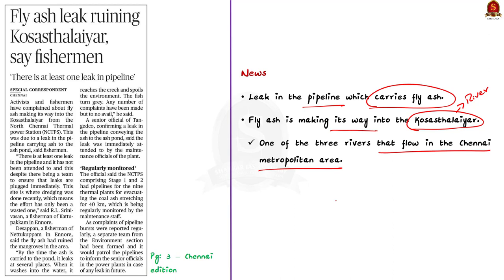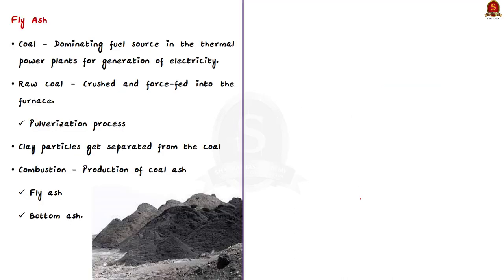Based on this context, let us quickly learn some important facts about fly ash. We all know that coal is the dominating fuel source used in thermal power plants for electricity generation. At coal-fired thermal power plants, raw coal is first crushed to the shape of flour and only then force-fed into the furnace. This crushing process is referred to as pulverization.